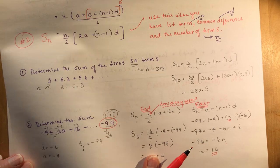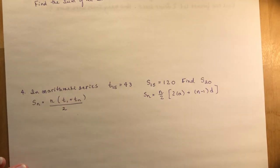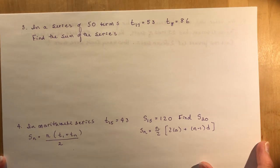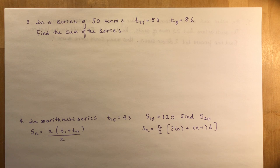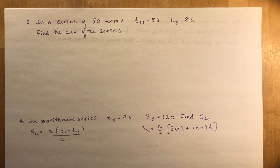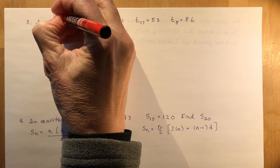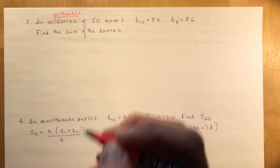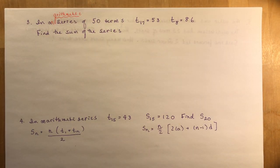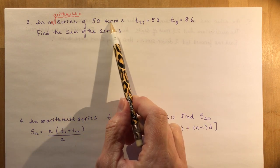Sorry about the little delay — sometimes Apple just decides to do things without asking you. Number three: in a series of 50 terms, certain terms are given and you're asked to find the sum of the series. This should say 'in an arithmetic series' because if you don't know whether it's arithmetic or geometric you're going to have problems. So I have 50 terms and I'm trying to figure out the sum of 50 terms in the sequence.